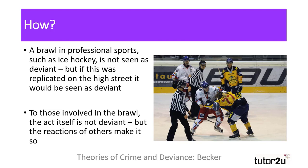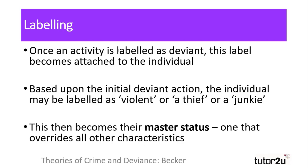For Becker, once the initial activity has been deemed deviant, a label is attached to those that have committed the act — they are labelled as some form of deviant. Labels such as violent, thief, or junkie could be attached to an individual based upon their actions. And particularly with deviant behaviours, this overrides all other characteristics that the person labelled possesses.